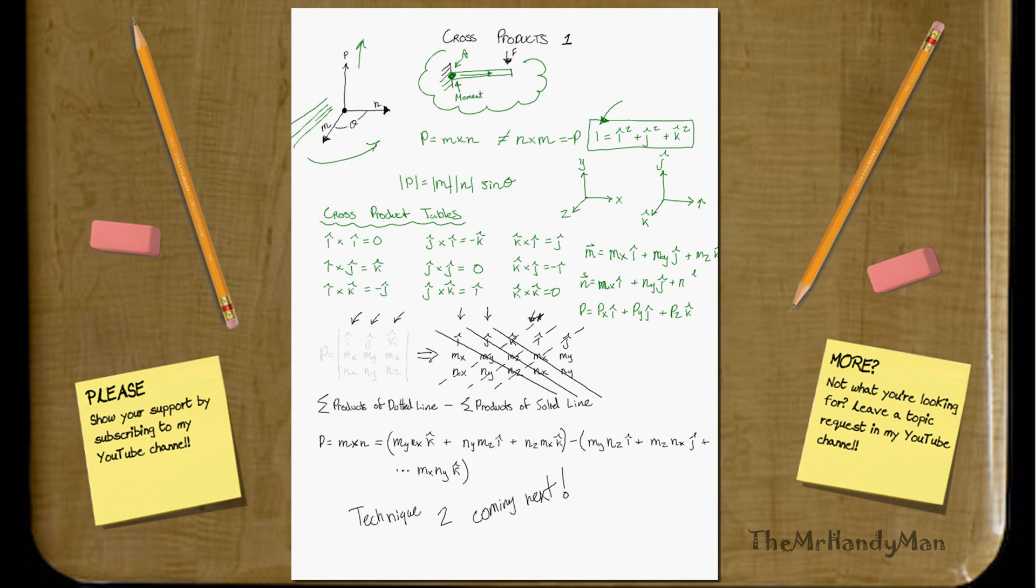There's a few different things that we could focus on here. We have our technique. If we have m cross n, we do i, j, k. Those are just the three coordinates. Then we have m x, m y, m z, n x, n y, n z.